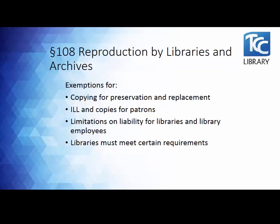Section 108 covers reproduction by libraries and archives. It provides specific exemptions in which libraries and archives may make reproductions without obtaining permission from or providing compensation to the copyright holder. In these instances, reproduction is meant to be isolated and unrelated — it should not result in the related or concerted reproduction of the same materials over a period of time. Neither should reproduction be systematic and serve as a substitute for, or replace, subscription to or purchase of the original work.